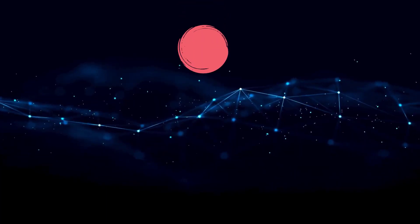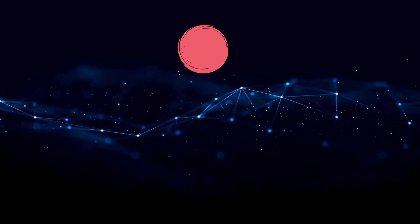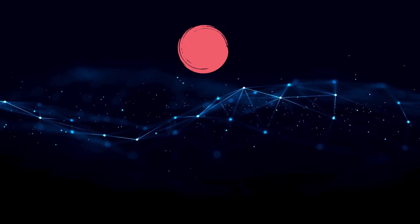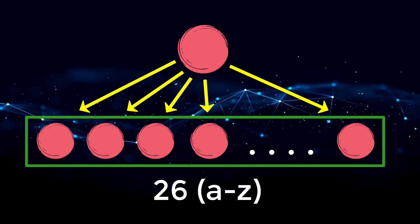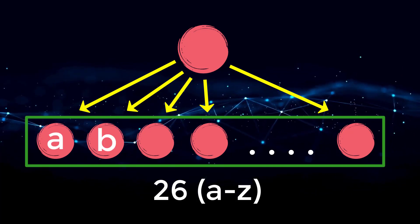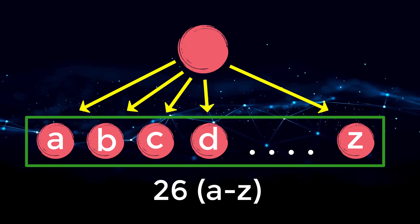Each node inside of our Trie will have the possibility to have up to 26 children, where each child is an individual lowercase letter — A, B, C, D, all the way up to Z.